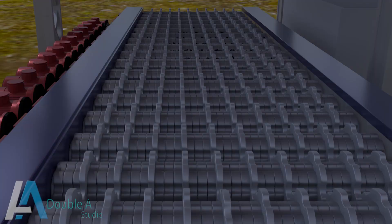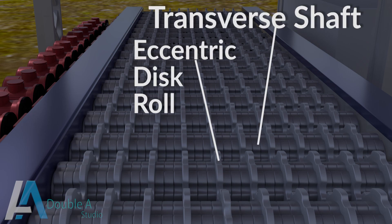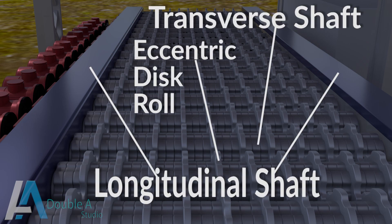Roller screen consists of main components like drive unit, transfer shafts with eccentric disc rolls, and longitudinal shaft.